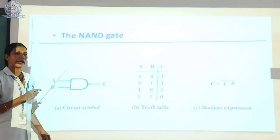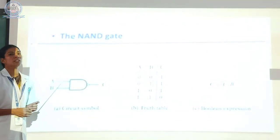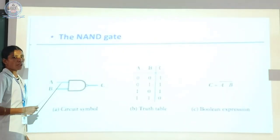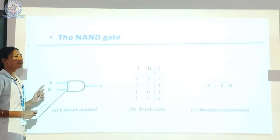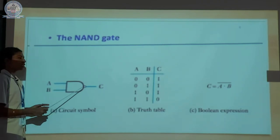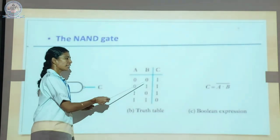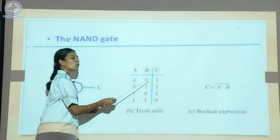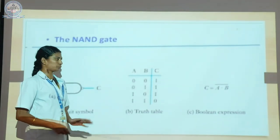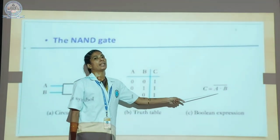Totally two gates are universal building blocks — NAND gate and NOR gate. NAND and NOR gates are called the universal building blocks. The NAND gate has two or more input signals producing only one output signal. Here A and B are inputs and C is the output. The truth table of the NAND gate: if any one of the inputs is low, the output is high. If both inputs are high, the output is low. The Boolean expression for NAND gate is C is equal to A dot B, whole bar.